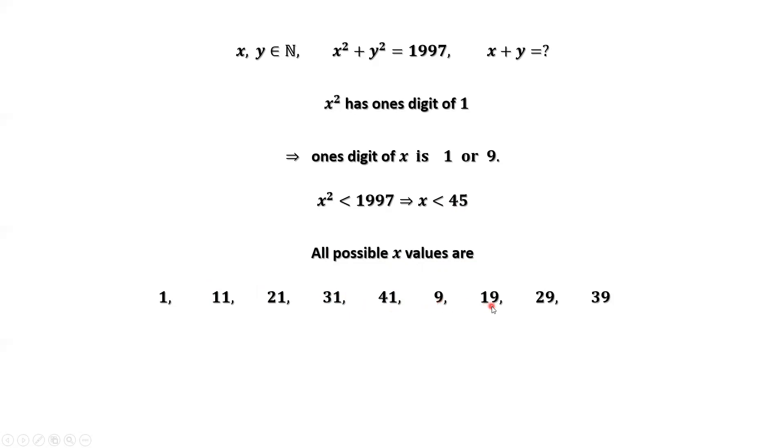9, 19, 29, 39. These numbers have one's digit of 9.